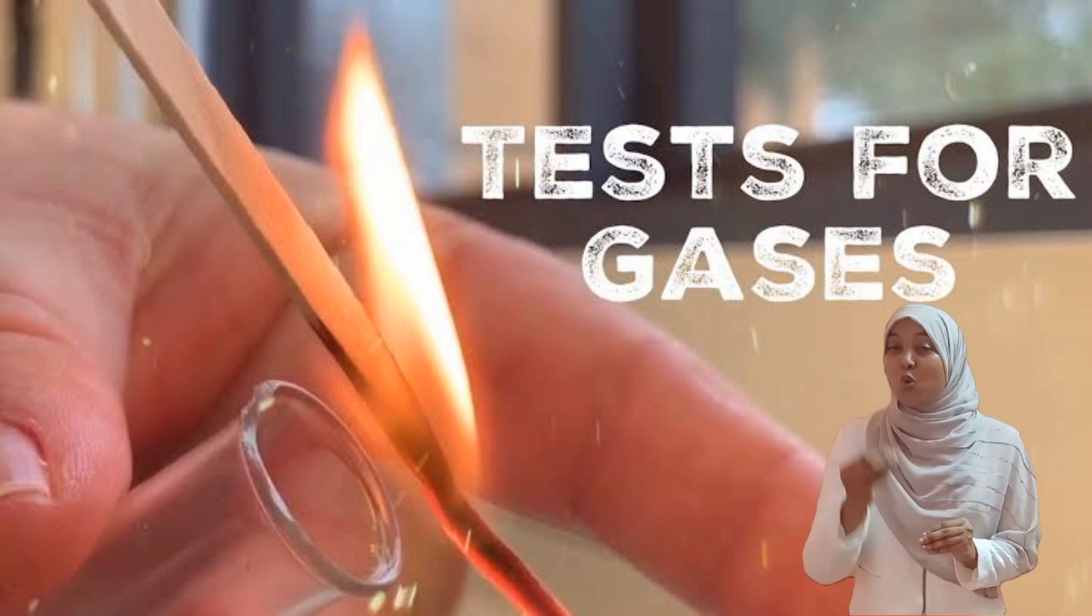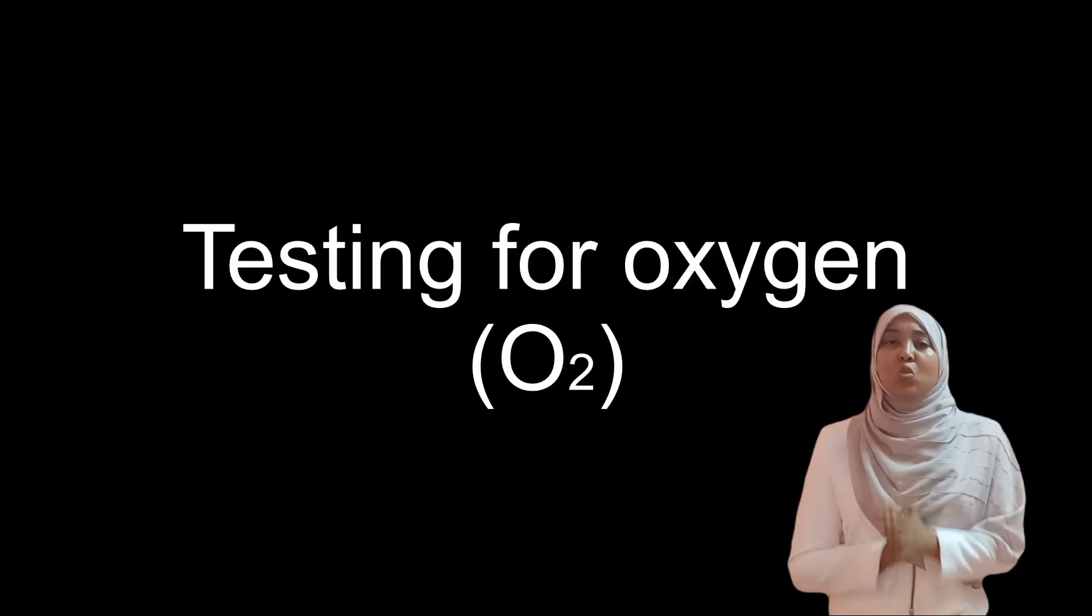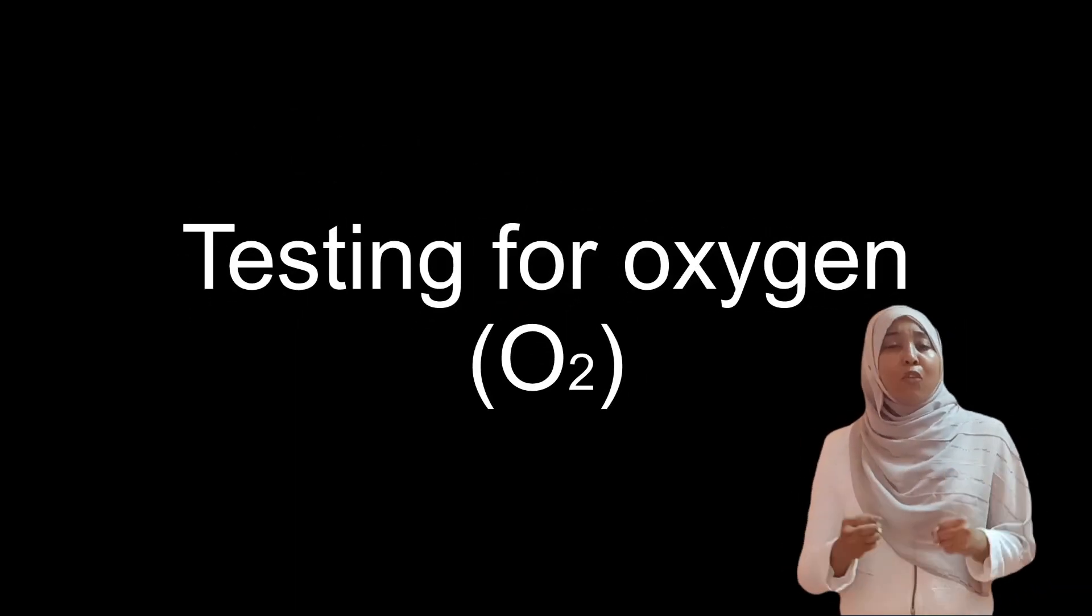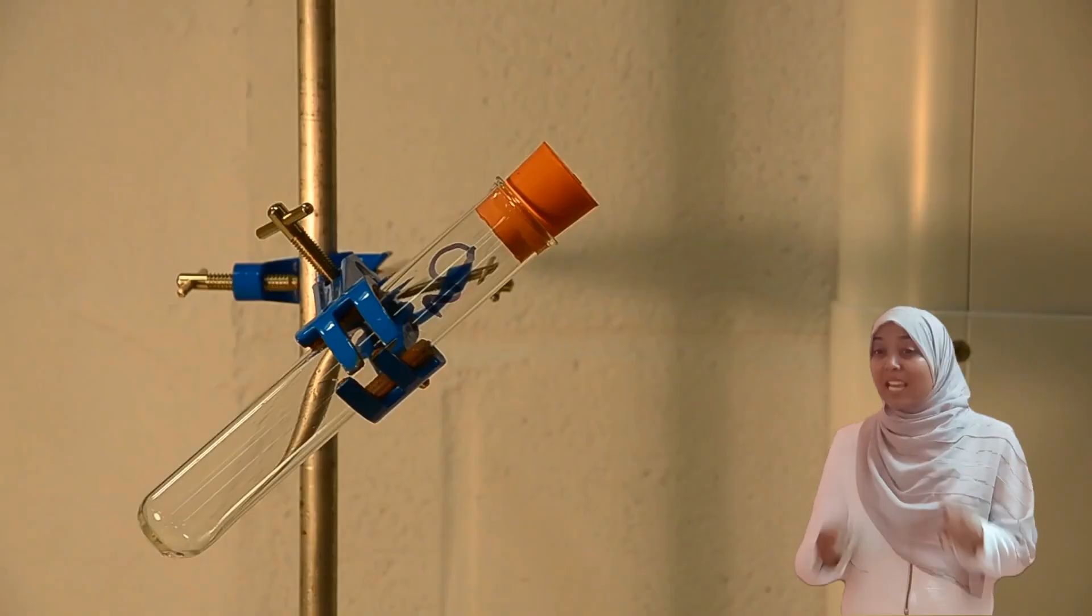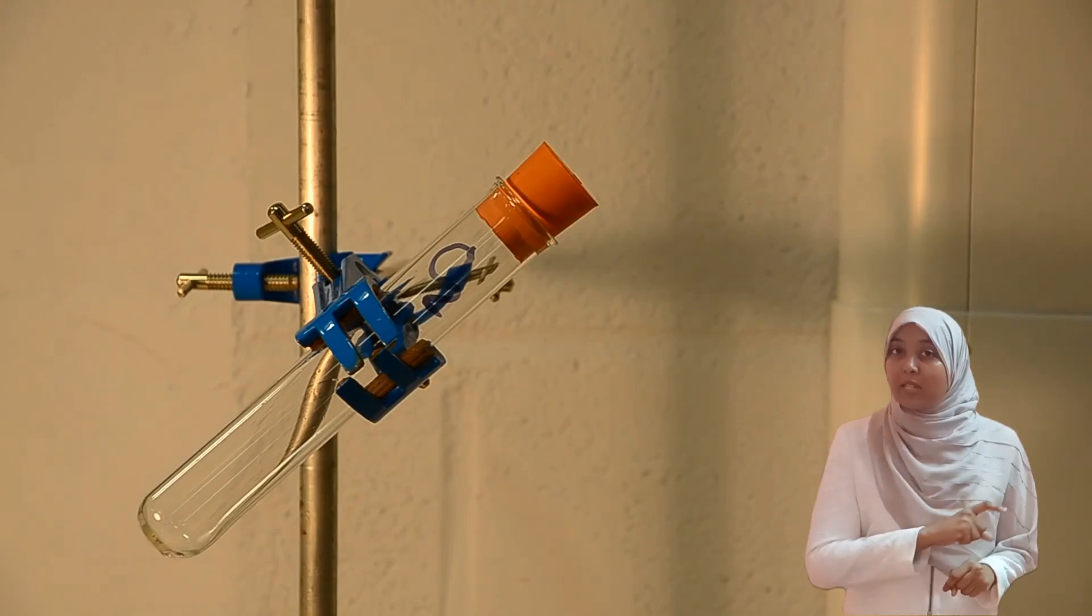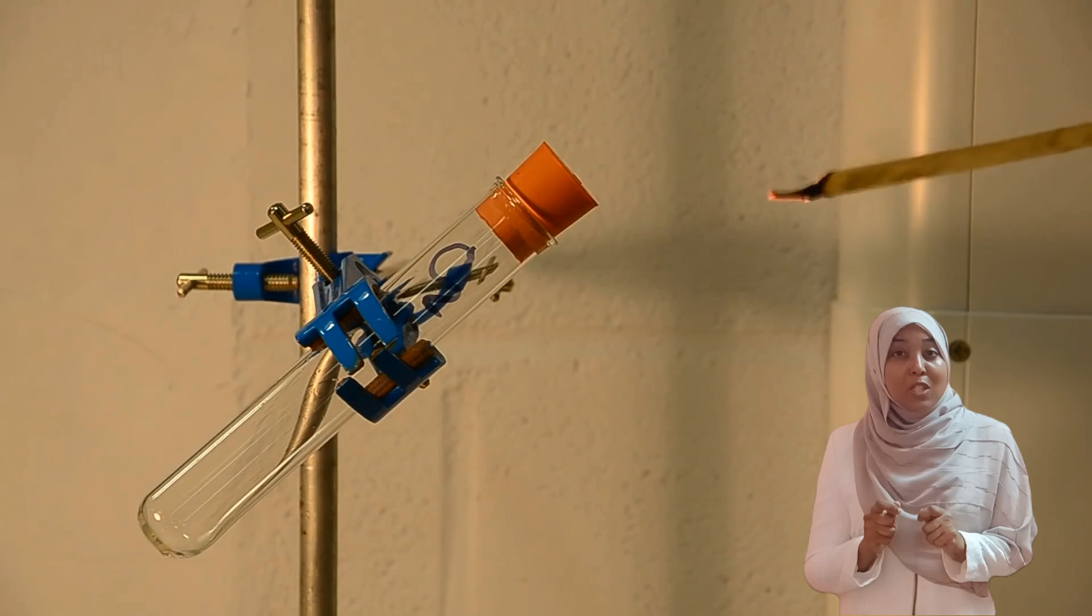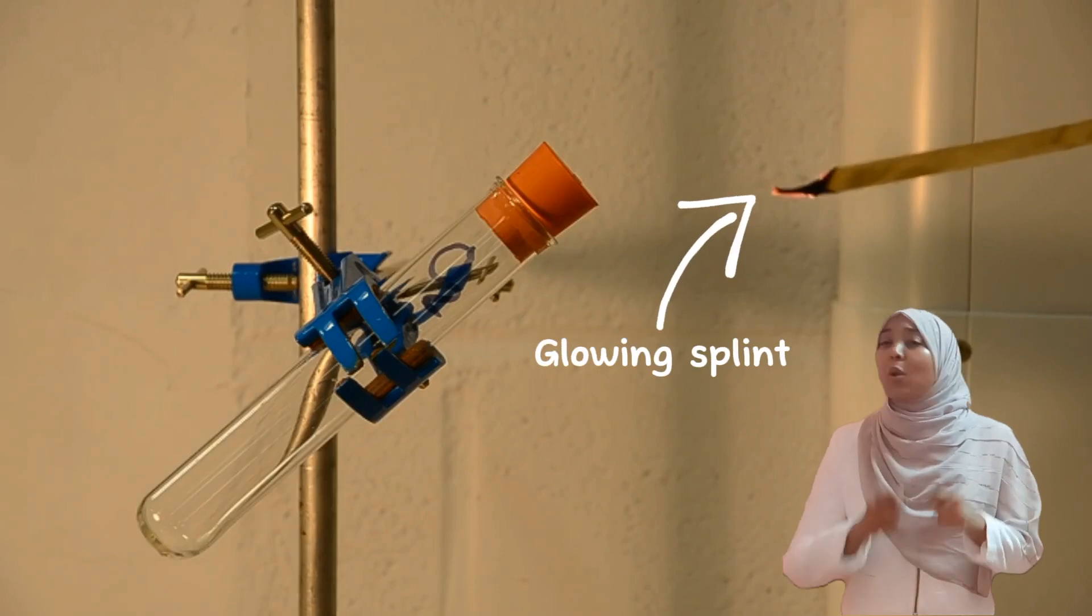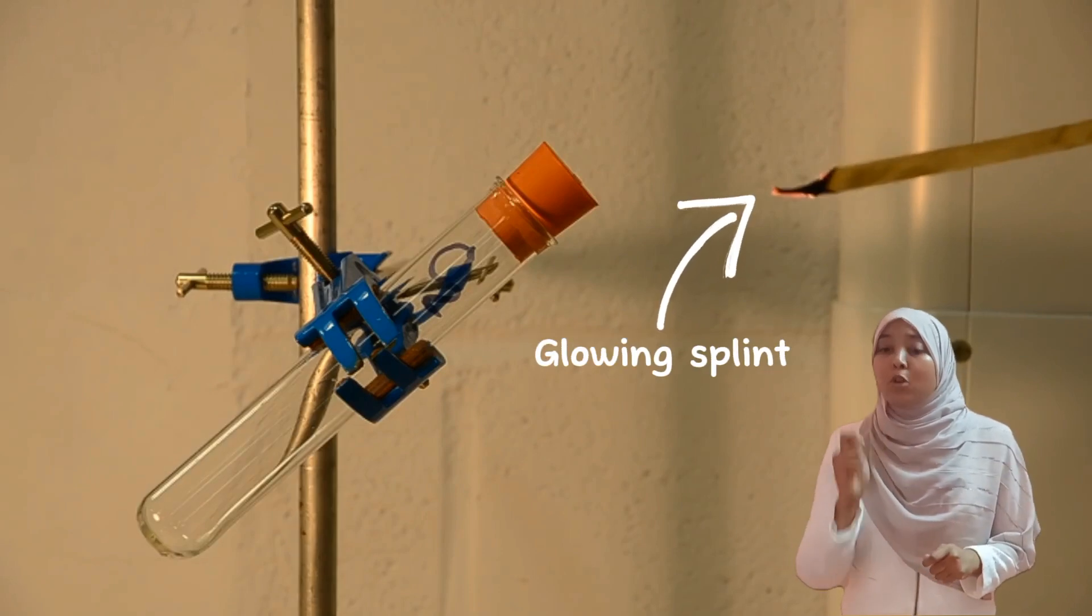Now let's start with the first one: oxygen gas. If you want to test whether a certain gas is oxygen or not, simply use a glowing splint. What is a glowing splint, you ask? A glowing splint is simply when you take a wooden splint, light it on fire, put out the flame—it glows, right? That is a glowing splint.